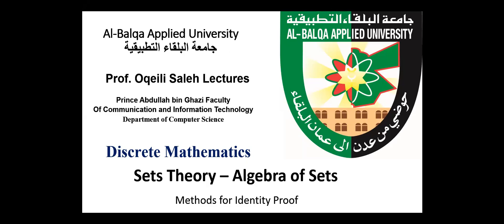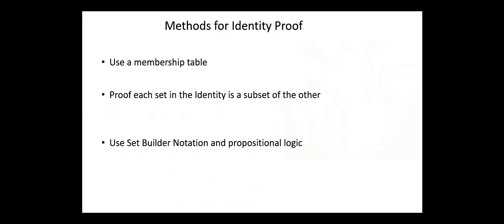Hello everyone. Today we continue with methods for identity proof. In the last video, we discussed how set identities can be proved using membership tables. Today we'll discuss the other two methods used for proving identities: prove that each set in the identity is a subset of the other, and the third method, use set builder notation and propositional logic.